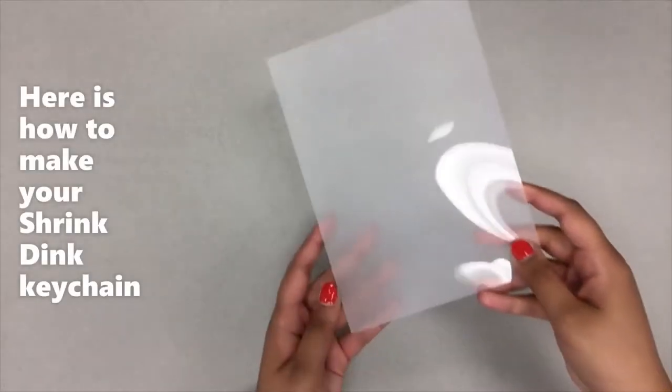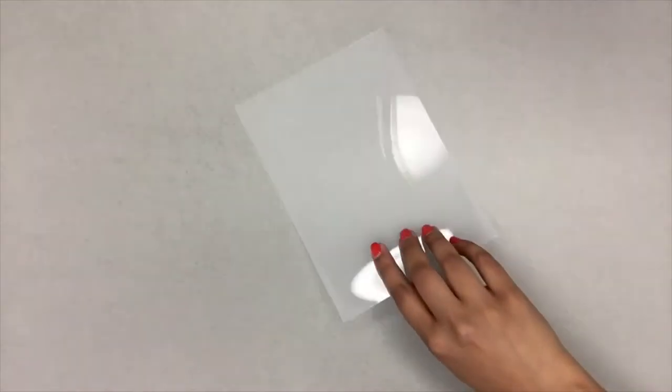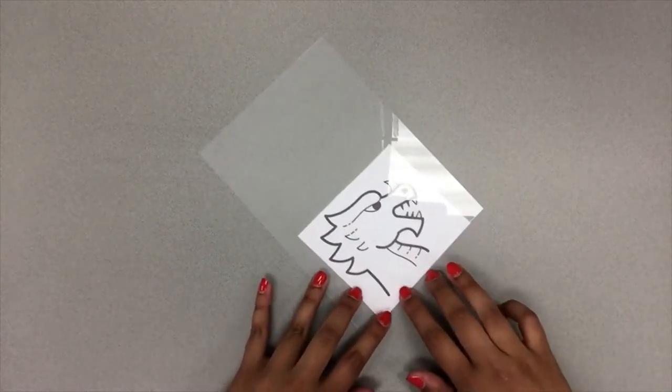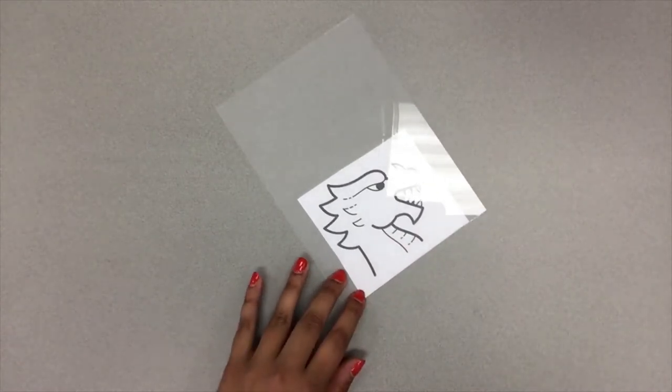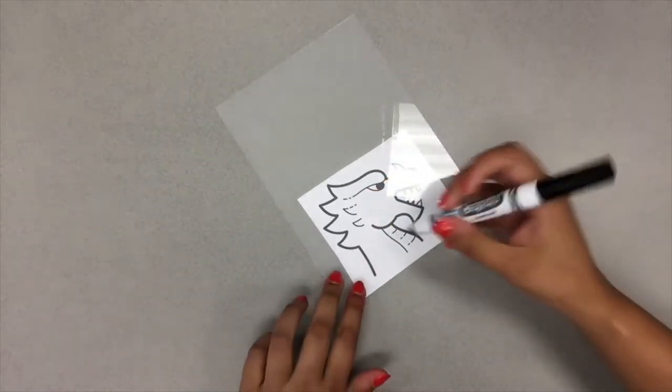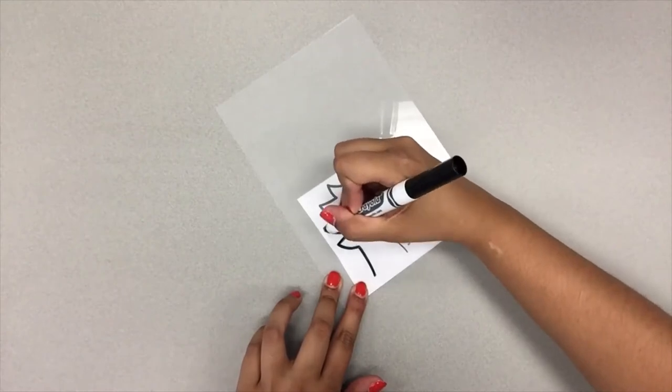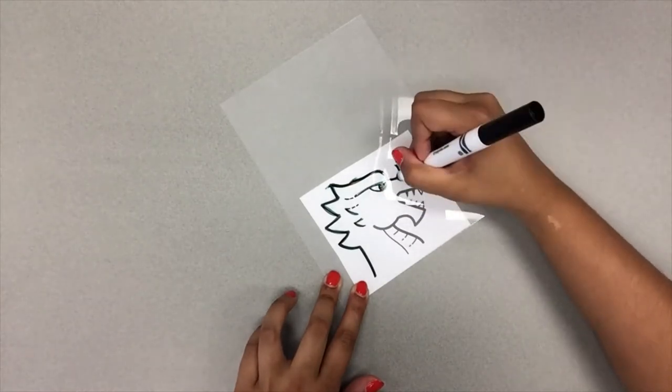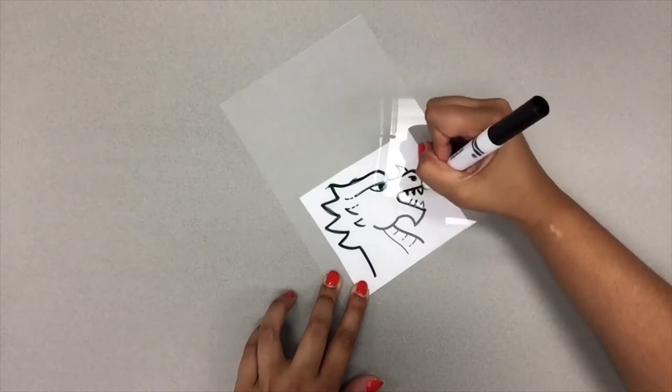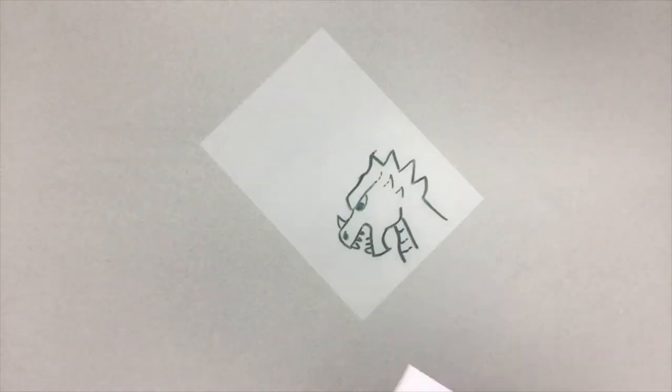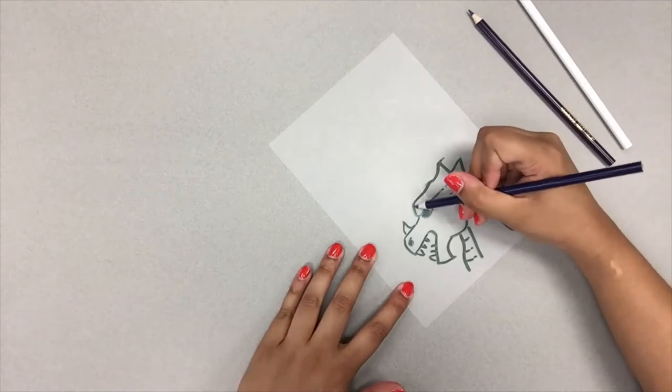Here is how to make your Shrinky Dink keychain. First, note that the Shrinky Dink sheet has a smooth side and a rough side. Use the smooth side for markers and begin tracing your design using the black marker. Permanent marker is preferred here. Once you are finished tracing, flip over to the rough side to color in your template with the colored pencils.